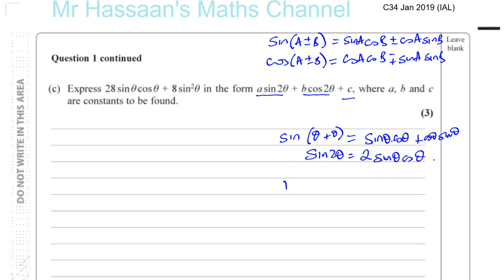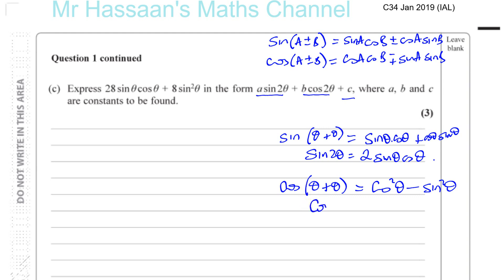For cos 2θ, that's the same as cos(θ + θ), which gives cos θ cos θ minus sin θ sin θ, which is cos squared θ minus sin squared θ. So these are the basic formulae that you need to know.